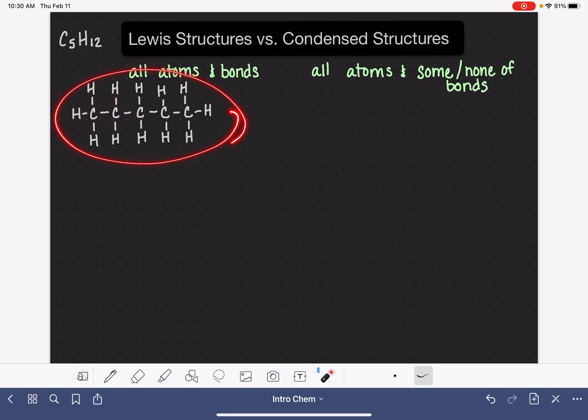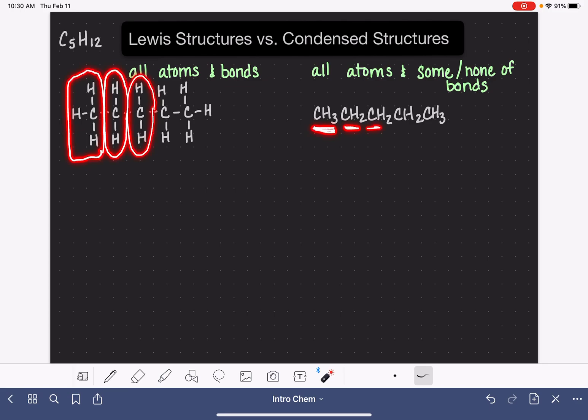So if we wanted to turn this into a condensed structure, it would look something like this: CH3, CH2, CH2, CH2, CH3. And what I'm doing in this condensed structure is I'm saying, I've got this whole chunk of carbon with three hydrogens on it. I'm just going to write CH3. And then next to that, I have a CH2. I'm just going to write CH2. And next to that, I have another CH2, so I'm going to write it again.